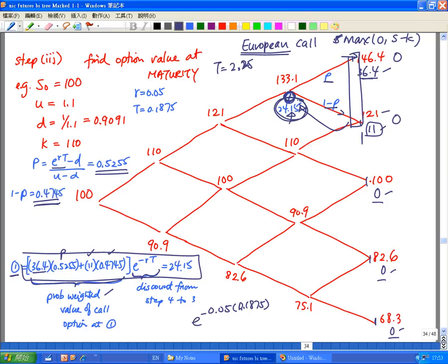So this is the formula to apply to get the option value as of this time step, or this node of 24.15. So this is an example of going back one node using two nodes from the future.